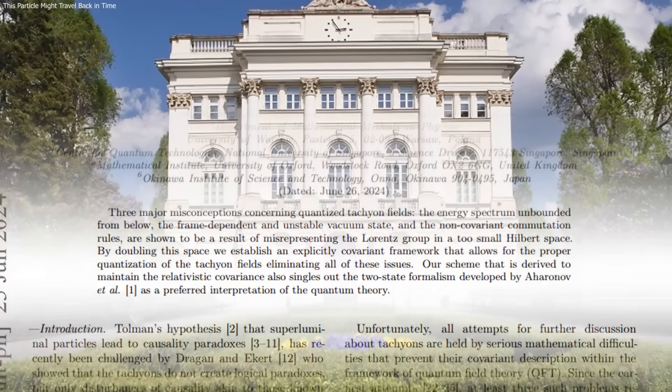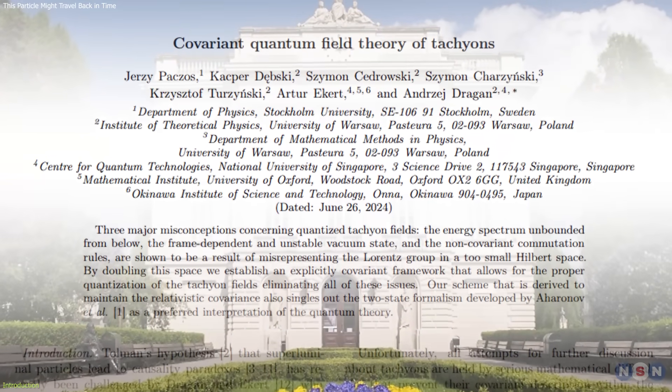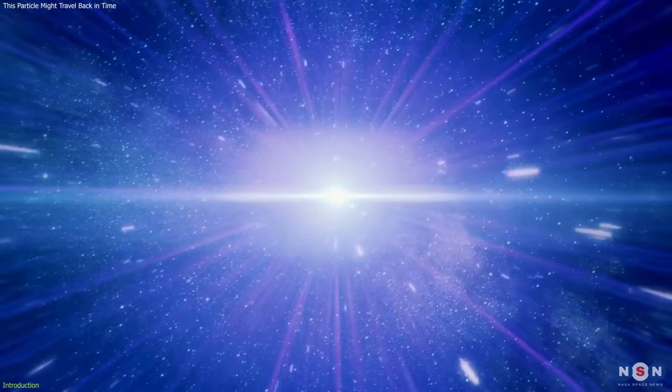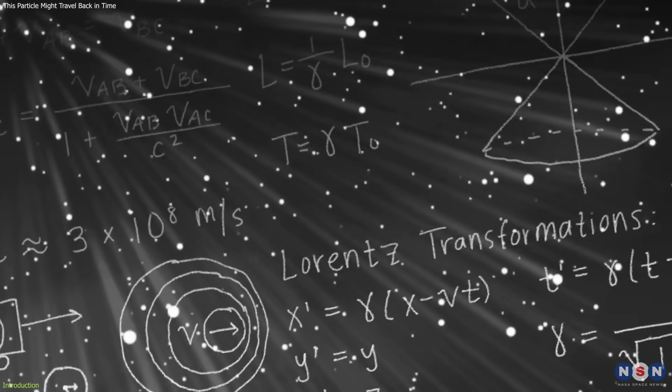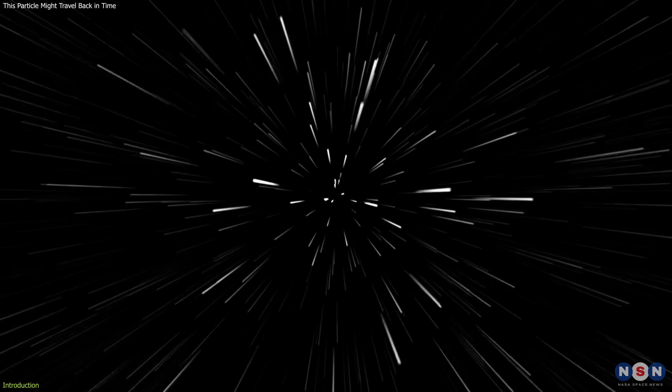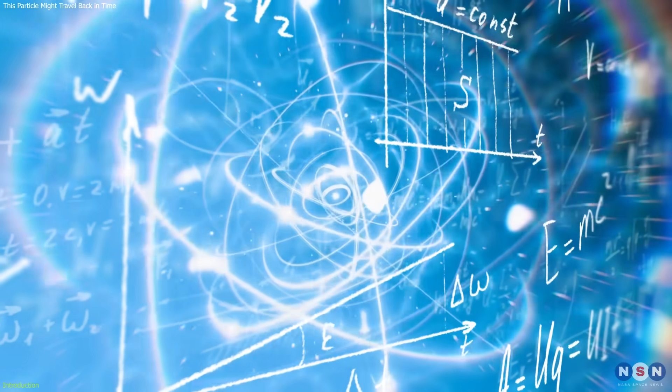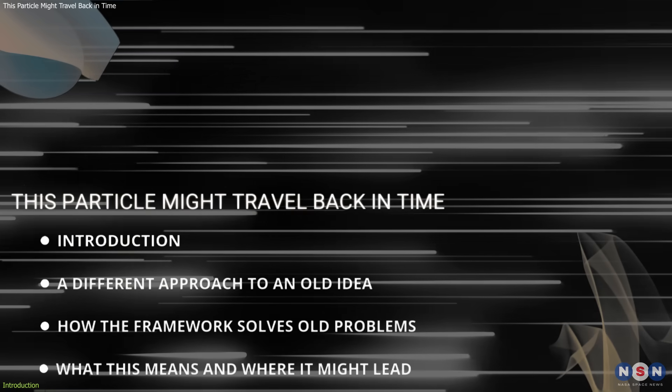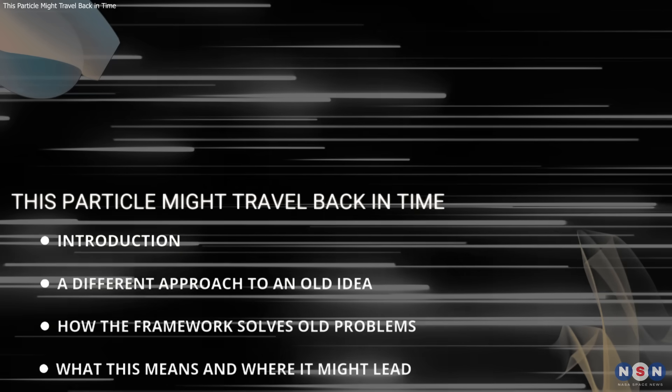A new peer-reviewed study from physicists at the University of Warsaw and Oxford proposes a framework where tachyons, faster than light particles, could exist without violating special relativity. Long dismissed for breaking causality, the revised model avoids paradoxes by using quantum principles. It doesn't prove tachyons are real, but shows they might be theoretically possible, reshaping how we think about the limits of physics.